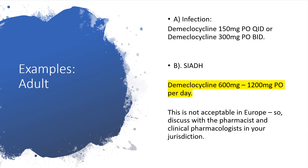I want to go over some dosing scenarios. For infection, particularly bacterial infection, demeclocycline 150 mg orally four times daily or 300 mg orally twice daily can be used. In the case of syndrome of inappropriate antidiuretic hormone, demeclocycline could be used at higher doses of 600 mg to 1,200 mg orally per day.